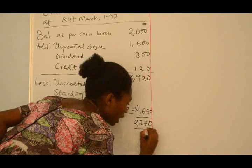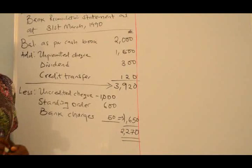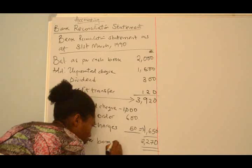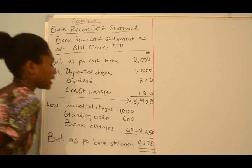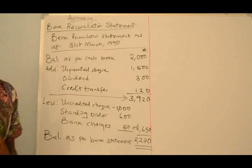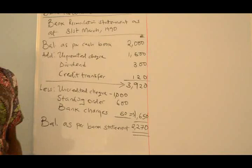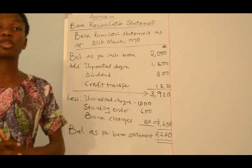If you look at our question, this balance matches the balance as per bank statement, confirming we have done it correctly. That is all about starting with our Balance As Per Cashbook. In our next video, we'll be solving this exact same question, but I'll show you how to start with Balance As Per Bank Statement and arrive at the Balance As Per Cashbook. If this video was helpful to you, don't forget to subscribe, like our videos, and share with those you feel it is helpful to. See you in our next class. Thank you.